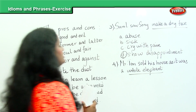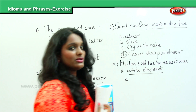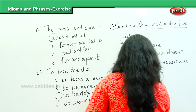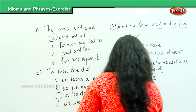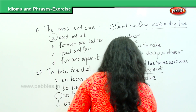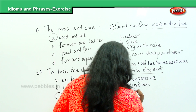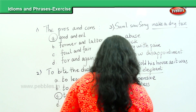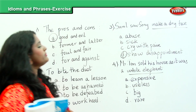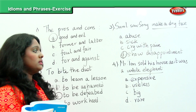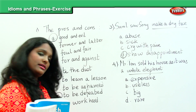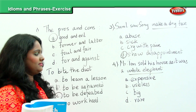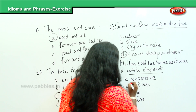I am going to give you the options and you are going to tell me the exact meaning of 'white elephant': expensive, useless, big, rare. Mr. Tom sold his house as it was a white elephant — as it was expensive, useless, big, or rare? The right answer is useless.